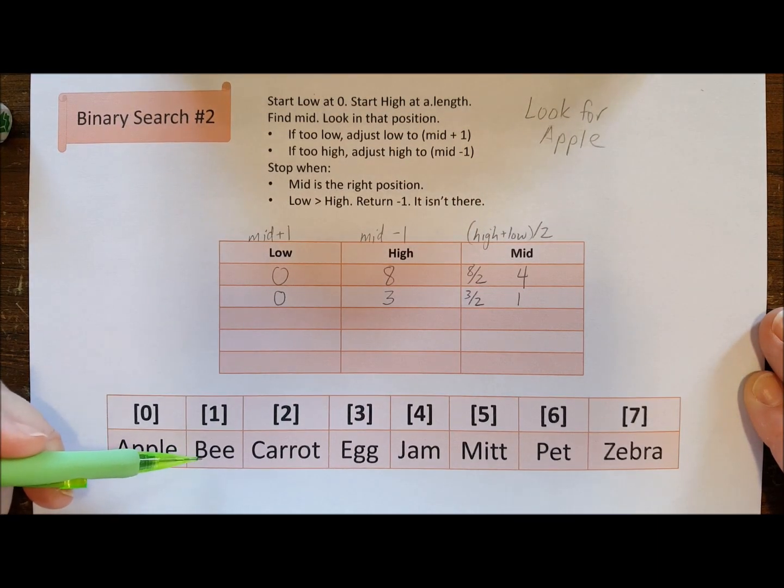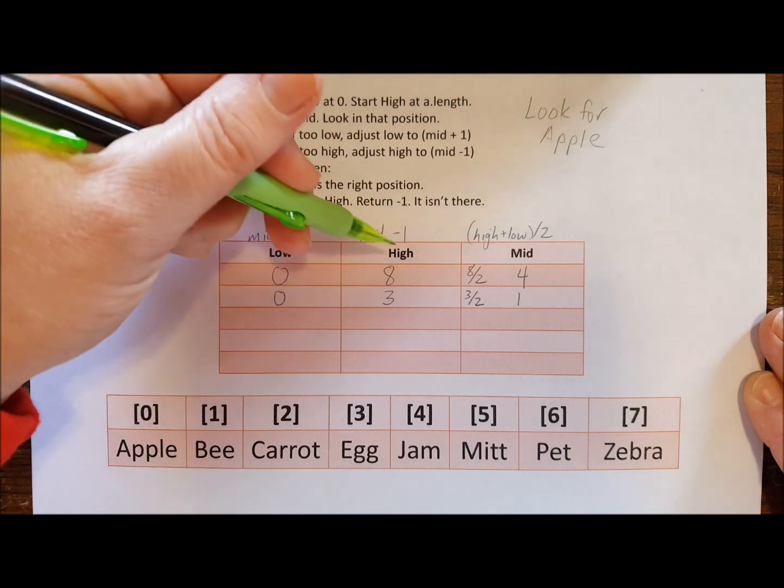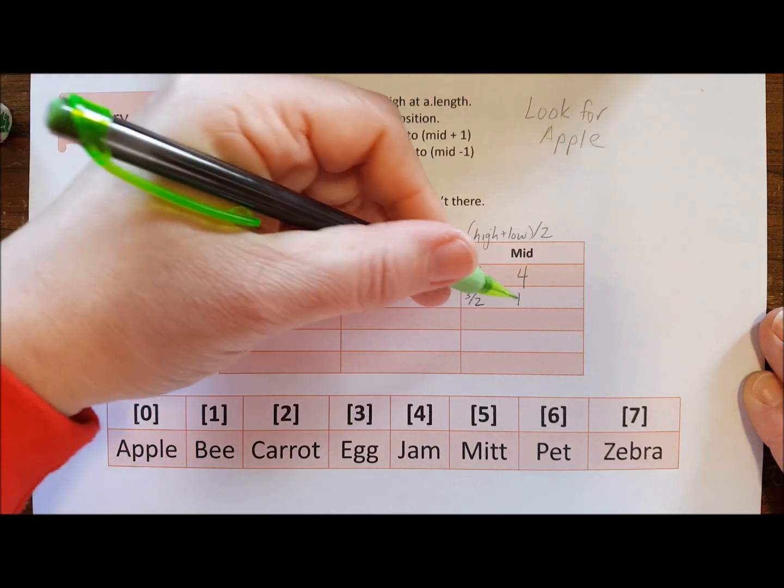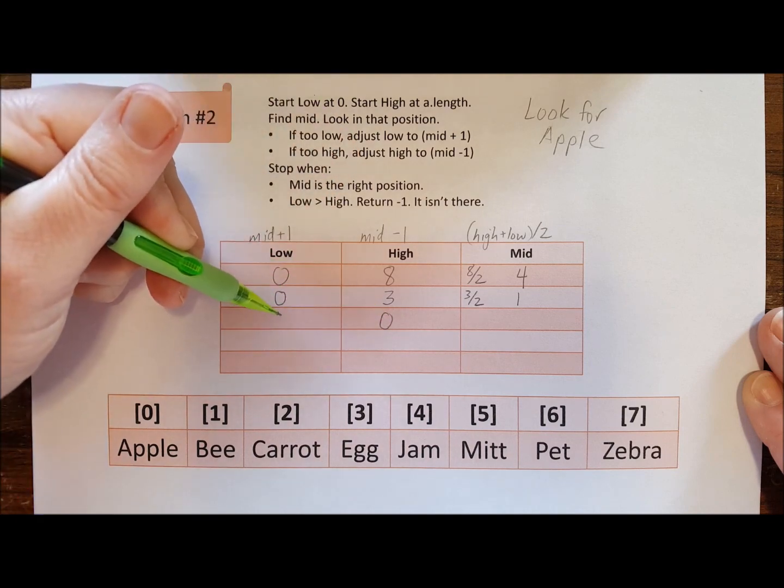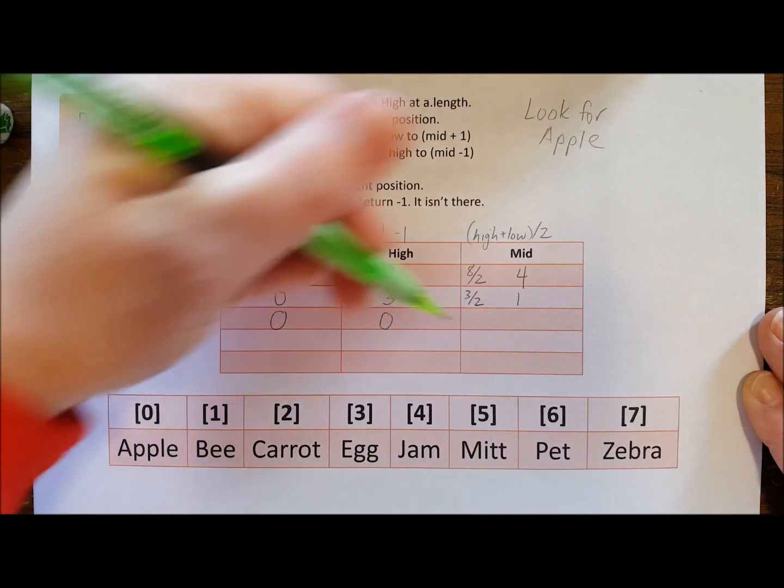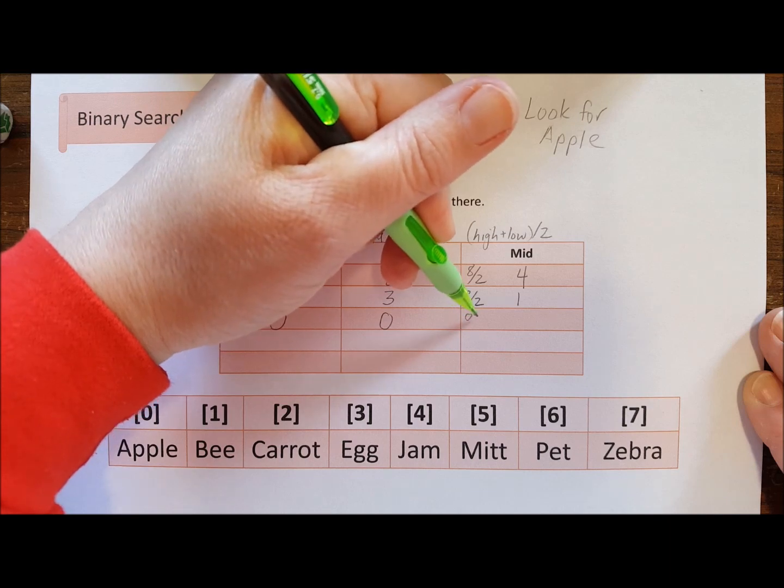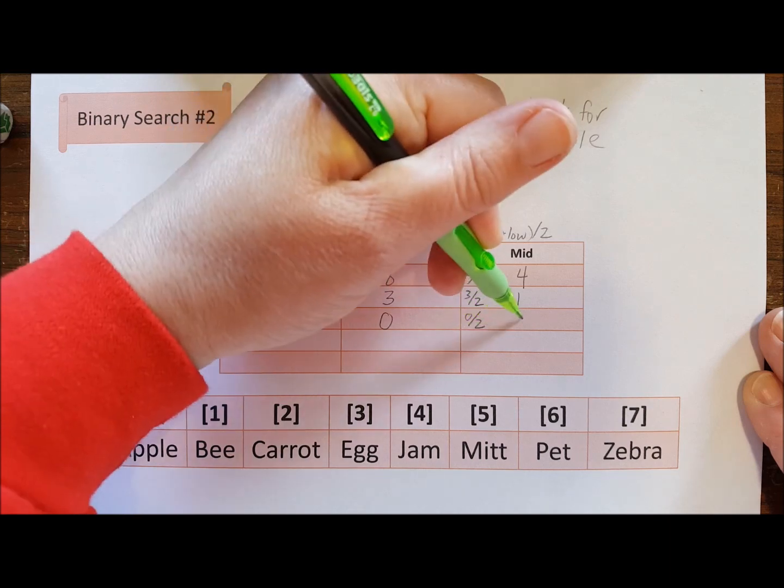So I'm looking for apple and that's still too high, so I'm going to put mid minus one, so that was one minus one is zero. It wasn't too low so that stays the same. I'm going to add them together and get the high number of zero, divide it by two, and that gives me zero.